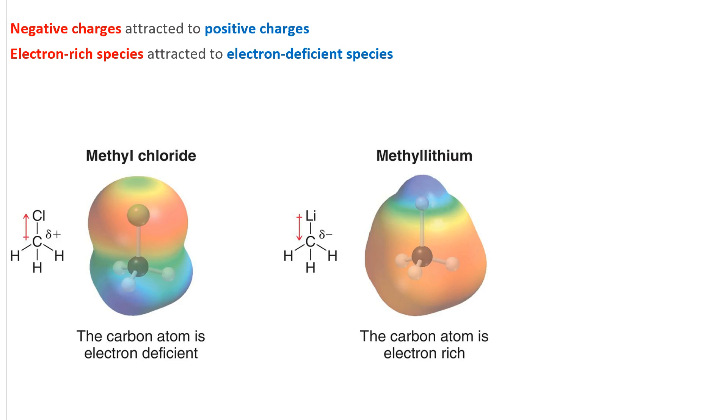Induction can lead carbon to be either nucleophilic or electrophilic. In the case of methyl chloride on the left here, the chlorine atom is more electronegative. That withdraws electron density from the carbon, making it electron deficient. That means it has a net positive charge, which makes it electrophilic, because opposites attract.